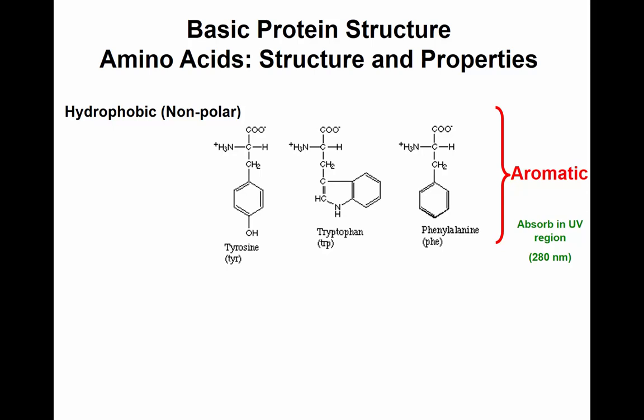I don't think you'll be expected to draw the amino acids, but at least know that tyrosine, tryptophan, and phenylalanine are non-polar aromatic amino acids. They have aromatic structure in their R group, which gives them the characteristic of absorbing UV light. Proteins absorb light in the UV range because of these three amino acids.